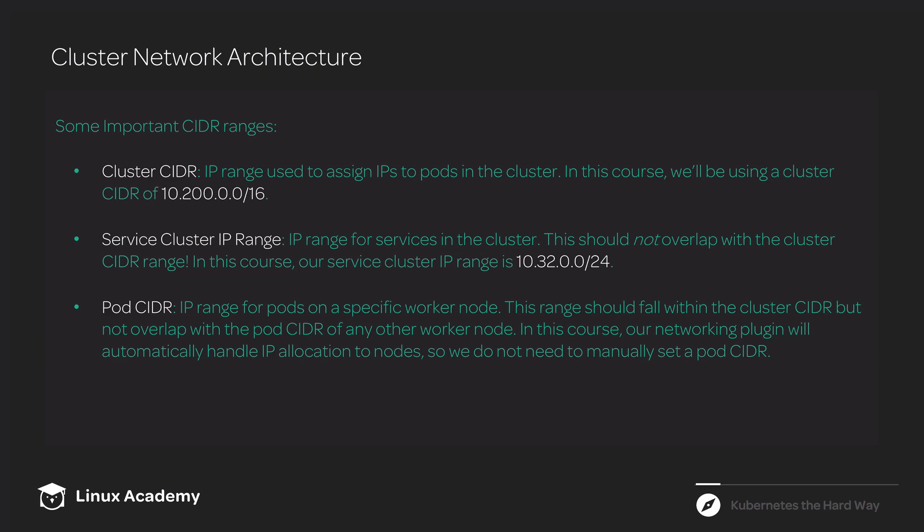The pod CIDR cannot overlap with the pod CIDRs for any other node. It's a way of allocating each node a range of IPs that it can assign to pods, making sure that one pod on one node does not get the same IP as another pod on a different node. The networking solution we're going to use actually automatically handles that process, so we don't have to manually set up a pod CIDR. But some Kubernetes network configurations do require you to do that manually, so it's good to know what it is.